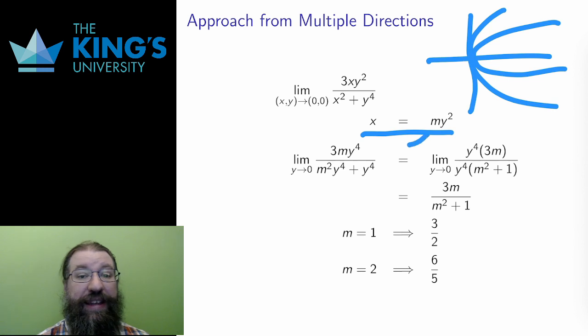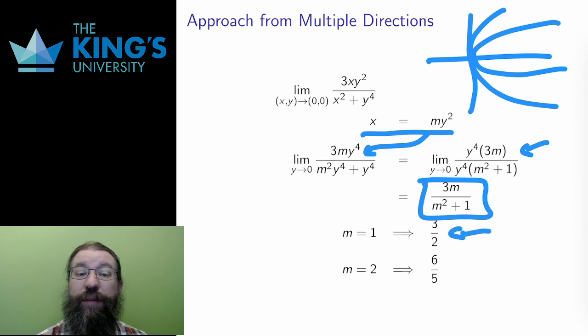Along a fixed path, I can again make a replacement and evaluate the single variable limit. For different choices of m, I get different values for the limit, and that shows me that this limit, likewise, cannot exist.